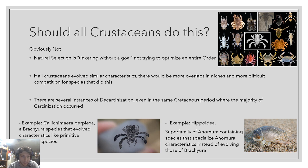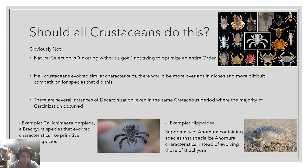An example of decarcinization is Calicomera perplexa, a Brachyura species that actually evolved more primitive, Anomura-like characteristics — things like paddle feet and long eyes without any stalks. Another example is the superfamily Hippoidea, an Anomura superfamily containing species like the mole crab and the sand flea, which didn't evolve characteristics of Brachyura but instead enhanced and built upon their own Anomura characteristics.